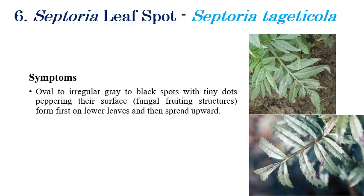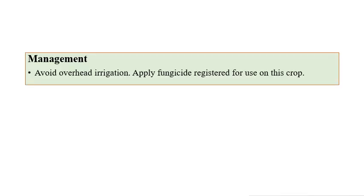Septoria leaf spot is caused by Septoria tageticola. Black, oval-colored spots or tiny dots can be observed, which represent the fungal fruiting structures. Symptoms first appear on the lower surface, then spread to the upper surface. On the upper surface, brown oval dots are visible, which later turn black. Management includes avoiding over-irrigation and applying a registered fungicide for the crop.